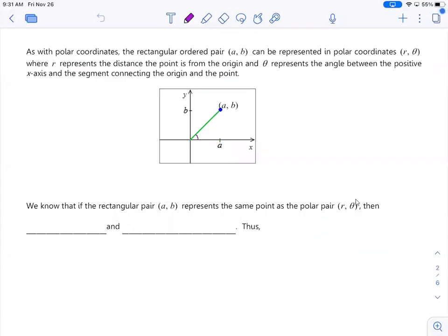So now we'll get to the point of how this relates to our course. As with polar coordinates, we have a rectangular ordered pair (A, B) that can be represented in a polar coordinate where we have our radius R, comma theta, the direction.